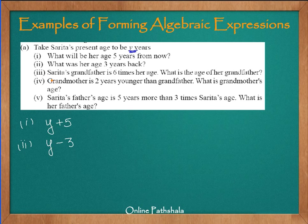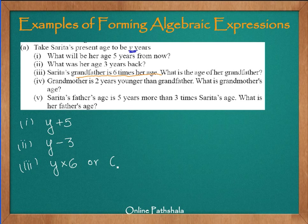The next question says that her grandfather is 6 times her age. What is the age of her grandfather? 6 times her age simply implies that if Sarita's age is y years, then her grandfather's age is 6 multiplied by her age, which we can also write as 6y years. So this is Sarita's grandfather's age.